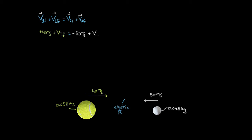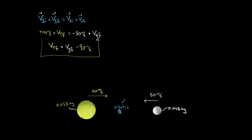Plus the final velocity of the second object, our golf ball. I'll call this VG final — V of the golf ball, F for final, after the collision. We could solve this for VT final. Subtracting 40 meters per second from both sides, I get that the final velocity of the tennis ball equals VG final, and then negative 50 minus 40 is negative 90 meters per second.